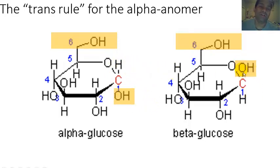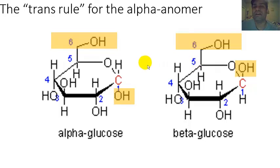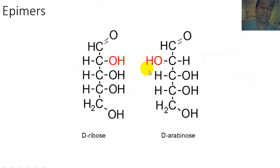It's worth noting that the alpha anomer or the beta anomer really represents what is going on at the anomeric carbon. Stereochemistry-wise, these are both D isomers — D stereochemistry — because the substituent on carbon number 5 is pointing up. If the substituent on carbon number 5 is pointing down, you'll have the L isomer or L stereochemistry.